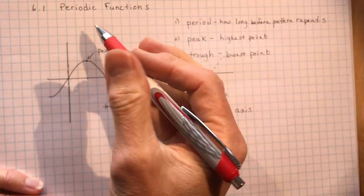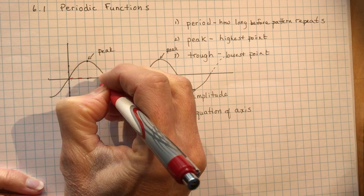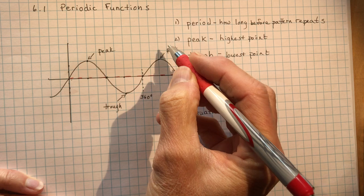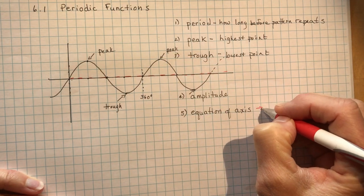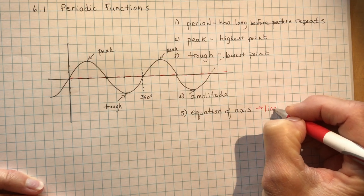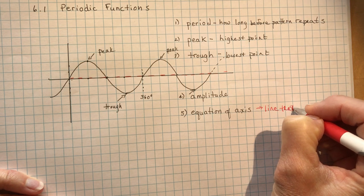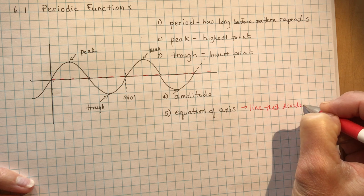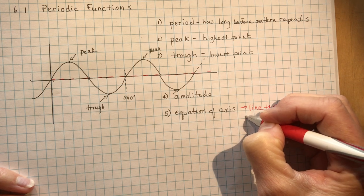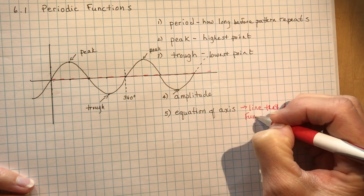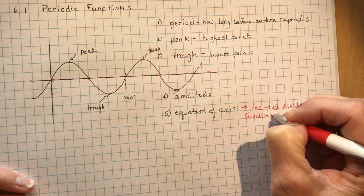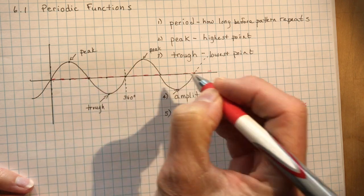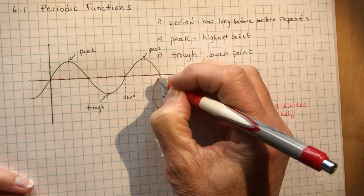So the axis is right here. Okay, so the axis is the line that divides your function into two parts. Line that divides function in half. Okay, so this would be your axis, equation of the axis.